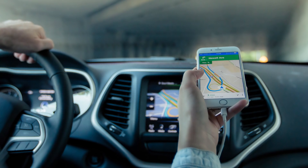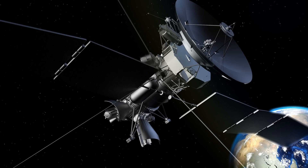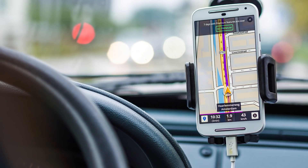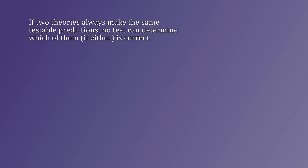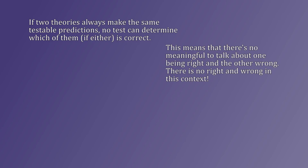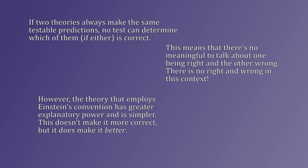Another method that's been suggested is to use GPS, which assumes that light travels at the same speed in all directions, and it works. Well, great — so we're done, right? Well, no, because the clocks on the satellites and the receivers are synchronized according to Einstein's convention. If we synchronized them according to Lyle's convention and used the same convention when calculating the receiver's position, the result would still be the same. This fact — that the two versions of the same theory make the same testable predictions — is what makes it impossible to test which one is correct. Therefore, it's not a question of which is more correct, but which is better. Einstein's version is both simpler and explains more. That makes it better.